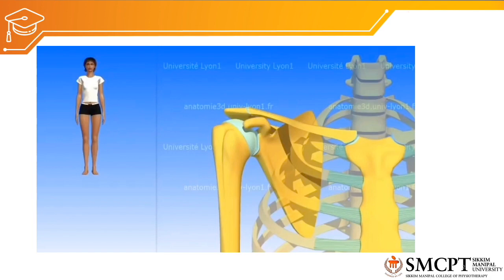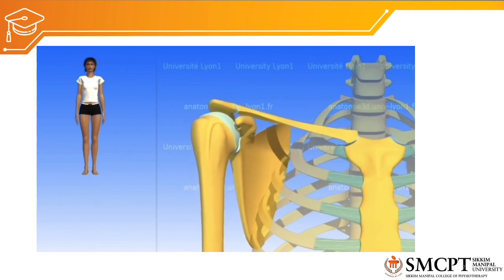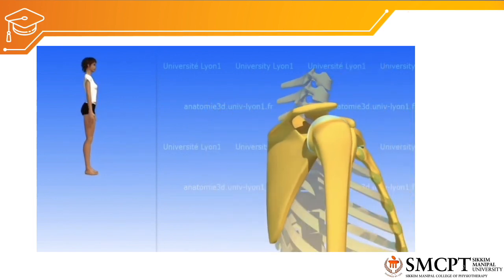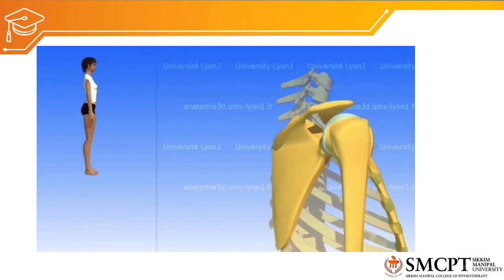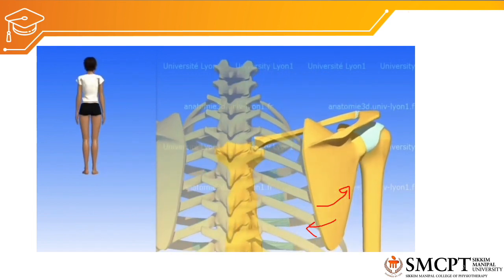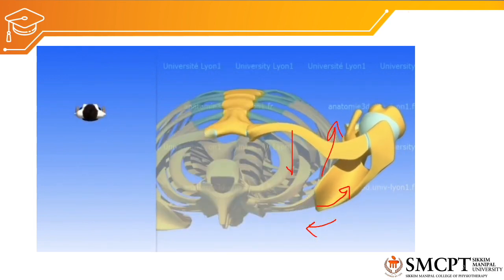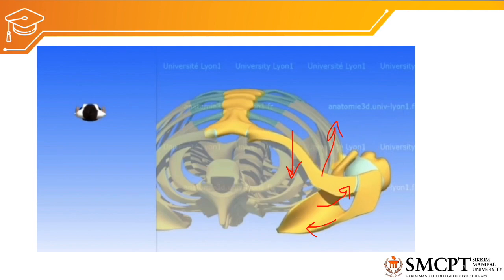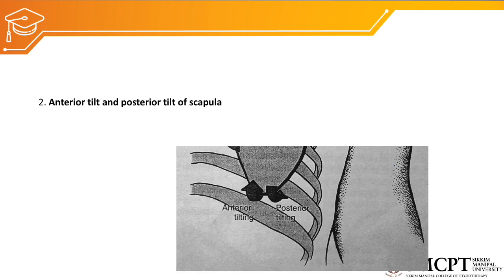Let's view this video demonstration to see how protraction and retraction occurs. There has to be abduction and adduction of the scapula along with external rotation and internal rotation of the scapula, and there is also an anterior and posterior shift of the clavicle. For all this movement to occur there has to be movement at the sternoclavicular joint and acromioclavicular joint, which in turn drives movement at the scapulothoracic joint. For creating protraction and retraction there should be an anterior tilt during protraction and a posterior tilt during retraction.